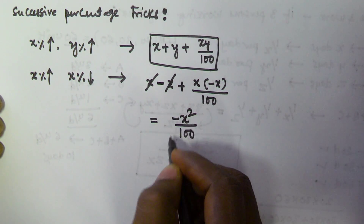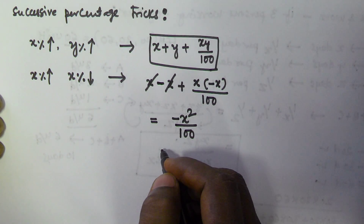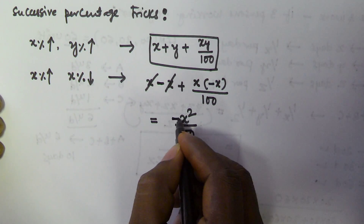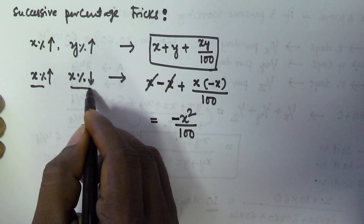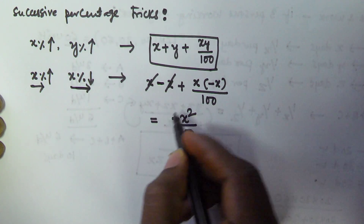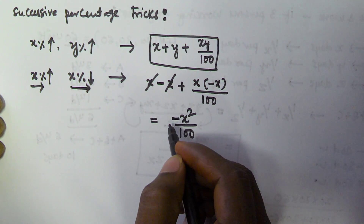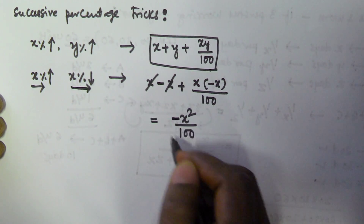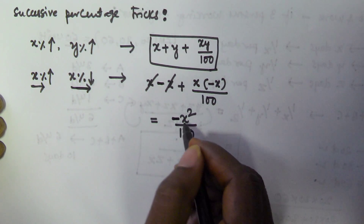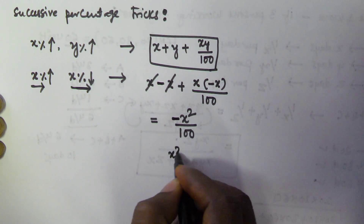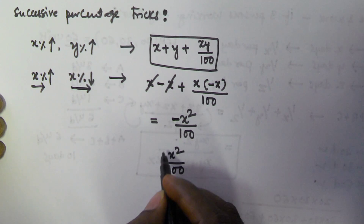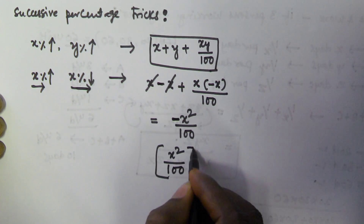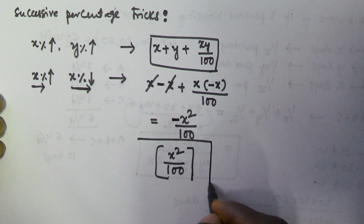The negative sign represents a reduction in the percentage change. That means if x percent is incremented and x percent is decremented, the resultant value is always going to be decremented. The overall percentage change is a decrement, and its magnitude is x squared by 100.